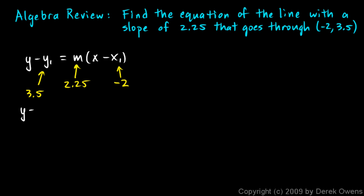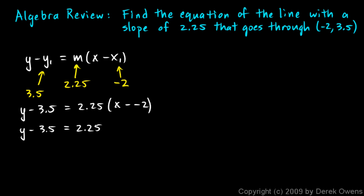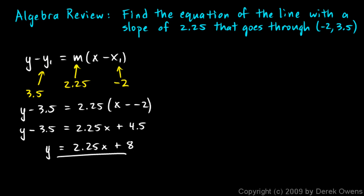Working that out, we get y minus 3.5 equals 2.25 times (x minus negative 2). Distributing on the right side gives 2.25x plus 4.5. Solving for y, we get y equals 2.25x plus 8. That's the equation of the line using point-slope form, then converted into slope-intercept form.